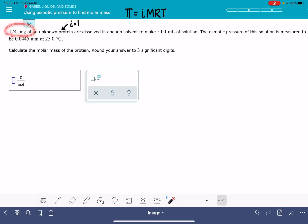So our mass of this unknown protein is 174 milligrams, dissolved in solvent to make 5 milliliters of solution. The osmotic pressure is 0.0445 atm, so that's our π. The temperature is 25 degrees Celsius, which we need to convert into Kelvin. 25 + 273 = 298 Kelvin.